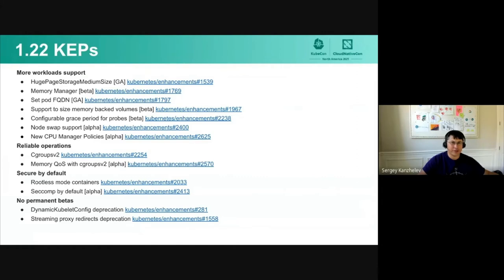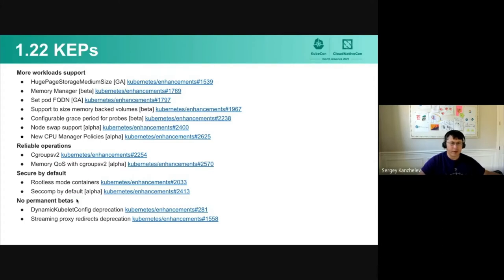I think it's important for Kubernetes to stay on the edge of which workloads we support, be it high-performance applications or databases. We try to support as many workloads as possible and constantly improve how we support them, making it possible to run applications with high availability and high performance. Another theme is reliable operations — it's critically important to stay reliable and secure by default. We're constantly working on cleaning up the code base, and 'no permanent betas' is always top of mind to ensure new features deliver value for users.